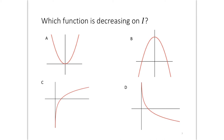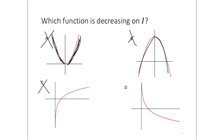Quick clicker question: which function is decreasing on the whole interval shown — a, b, c, or d? Pause the video and give it your best shot. Graph c is clearly increasing, so it's not that. Graph a is decreasing on one portion but increasing on another, so it's not purely decreasing. Graph b goes up first and then down, so it's not purely decreasing either. Graph d is definitely decreasing on the whole interval, so the answer is d.